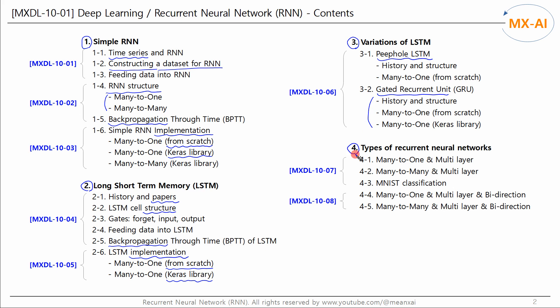In Chapter 4, we will implement different types of recurrent neural networks one by one. We'll look at the structure of a multilayer recurrent neural network and implement it, and look at the structure of unidirectional and bidirectional recurrent neural networks and implement them.